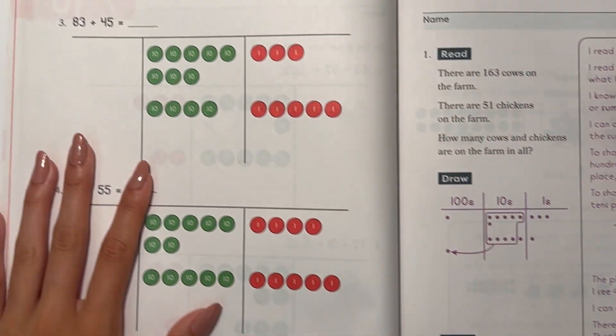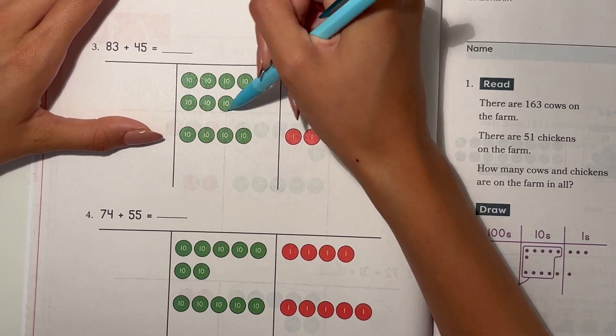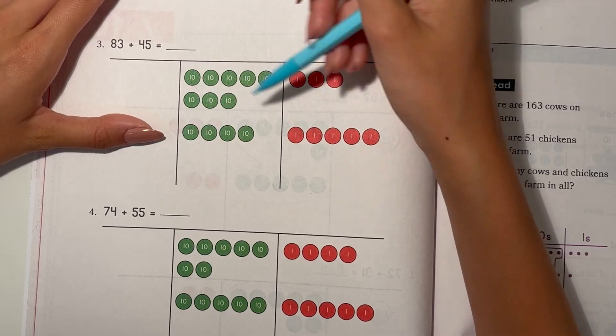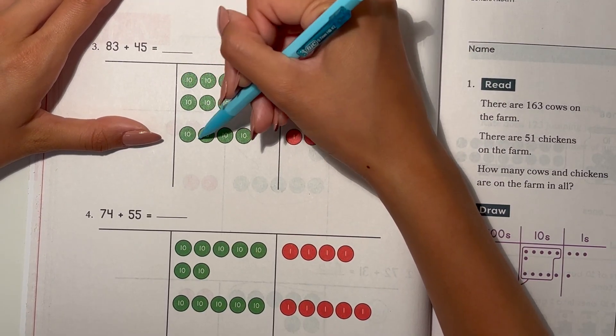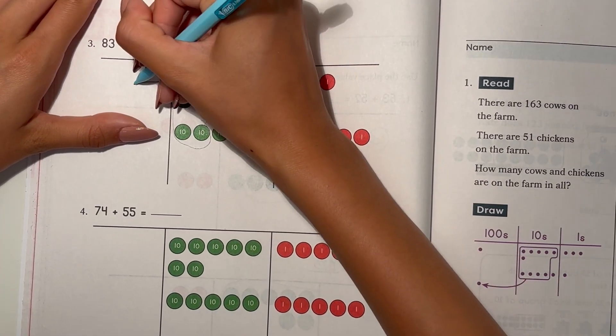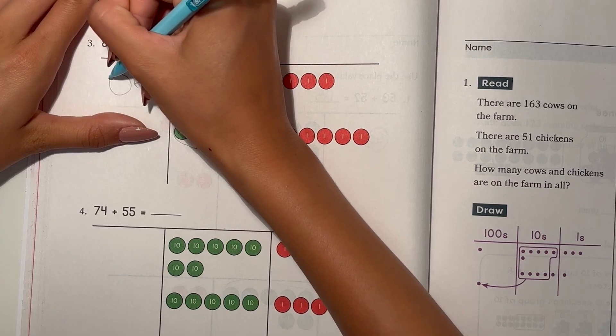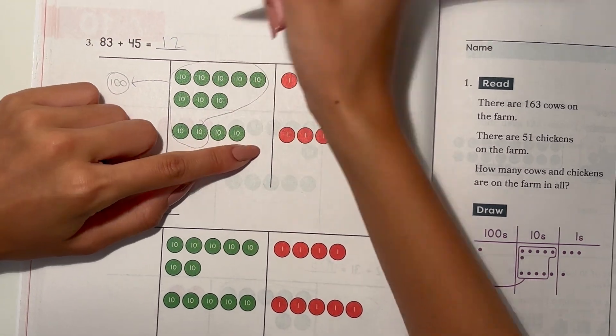We have some more on the back page. Number 3. 83 plus 45. So we don't need to regroup the ones, but the tens we do. This would be 10 tens, which is 100. So our answer is 128.